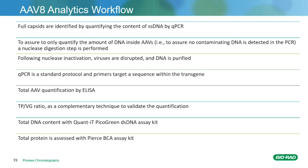In order to show this as a proper workflow, there was a lot of analytics involved. The full capsids are identified by quantifying the content by qPCR. In order to assure that we're only quantifying the DNA inside the AAV, a nuclease digestion step was performed. Following that inactivation, the viruses are disrupted and the DNA is purified. The qPCR is a standard protocol and the primers target a sequence within the transgene. Total AAV quantification was done by ELISA. The total protein to viral genome ratio was a complementary technique used to validate the quantification. Total DNA was done using a PicoGreen assay kit and total protein was with a Pierce BCA assay.